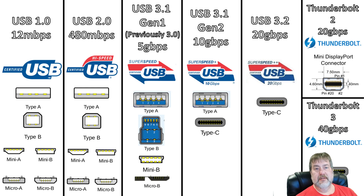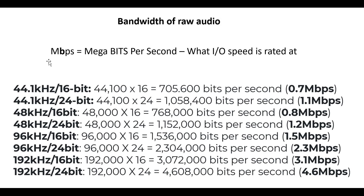A single channel of audio is a fraction of that bandwidth. Looking at this chart, a 44.1 kHz 16-bit file only consumes 0.7 megabits per second — not gigabits, megabits per second. Even at 192k 24-bit, the highest resolution we can do, it's only 4.6 megabits per second. So when you're talking 5 gig, 10 gig, 20 gig, 40 gigabits per second, it's a huge, huge difference.